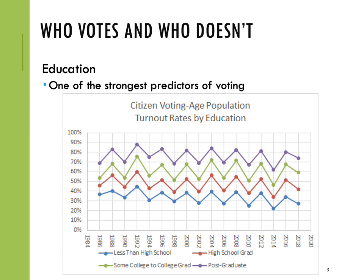Discussion question number one: across education levels, which group tends to vote at the highest level? And the second component is to identify which group votes at the lowest level.